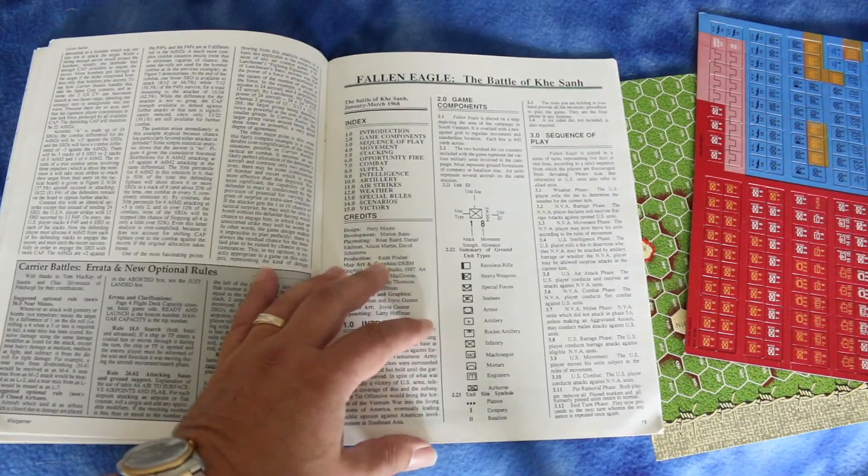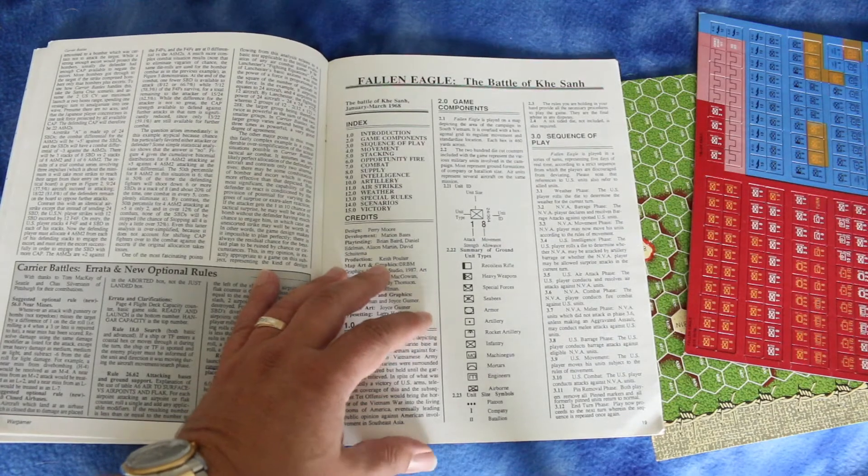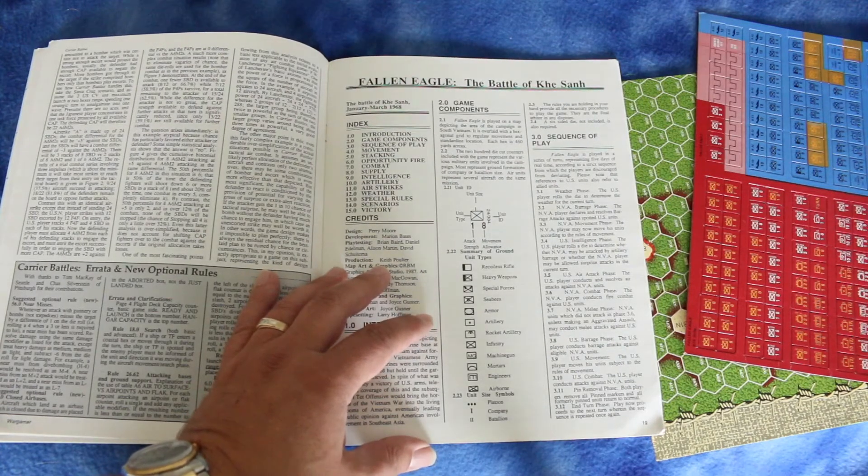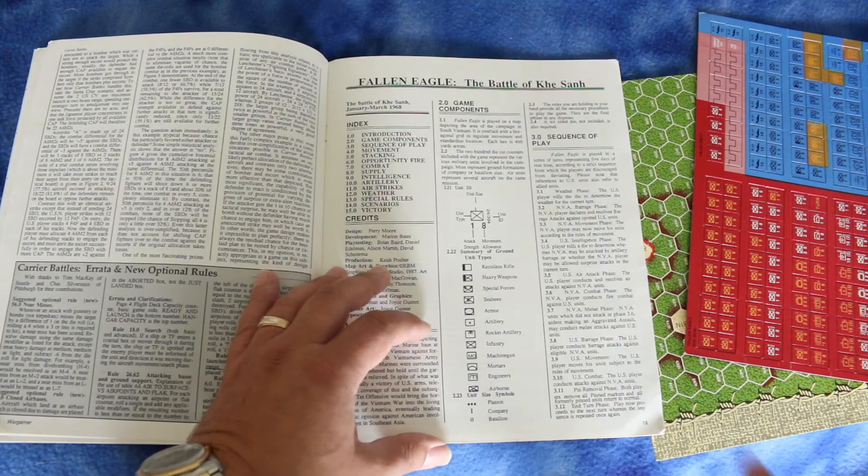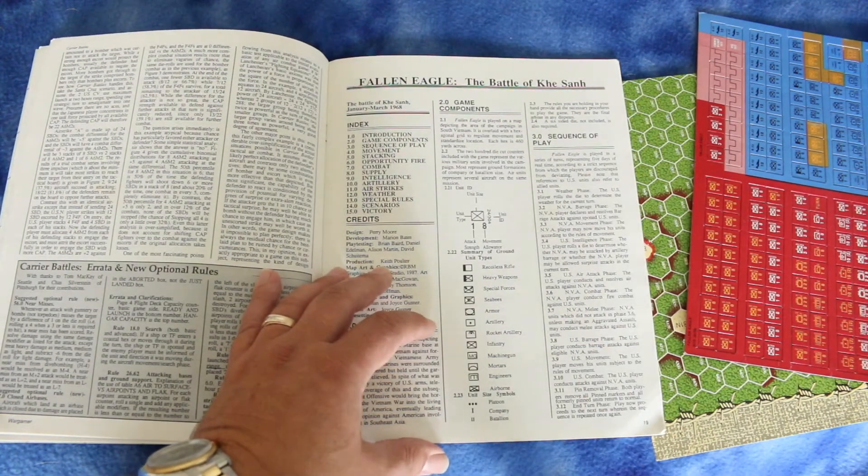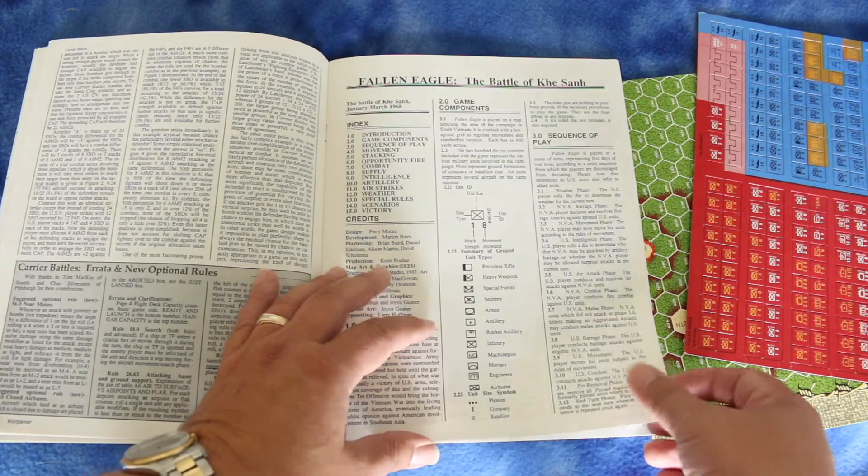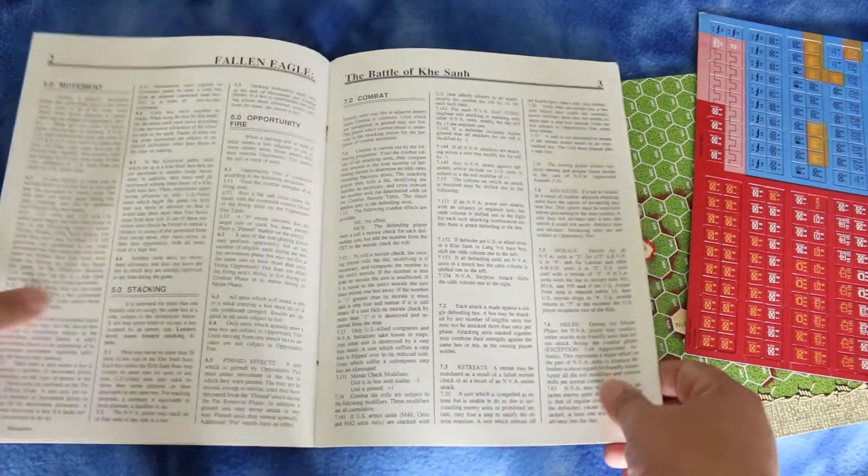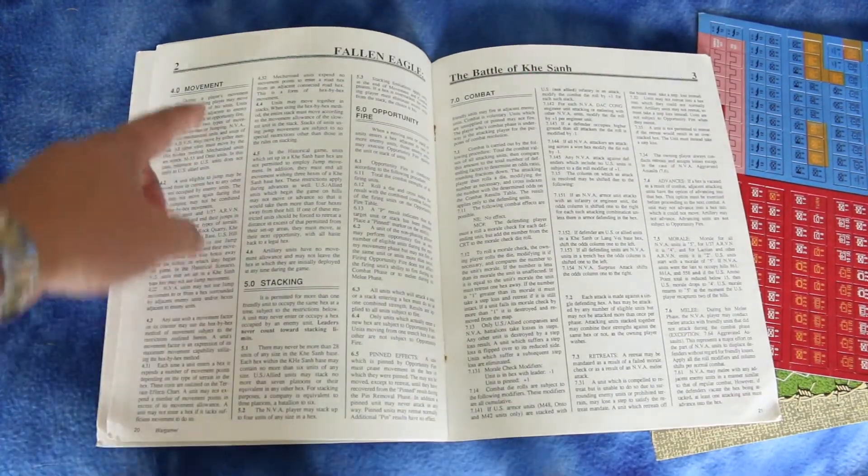US barrage phase, US movement, US combat, and pin removal phase. I wonder what they're doing in the US barrage phase if that's just artillery. I assume that's also including air because the US had a ton of air power in this battle. All right, but here it's going into more detail on movement and stacking.